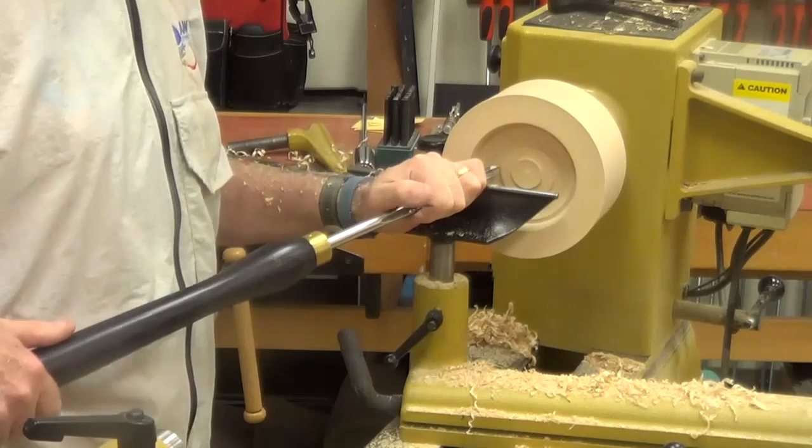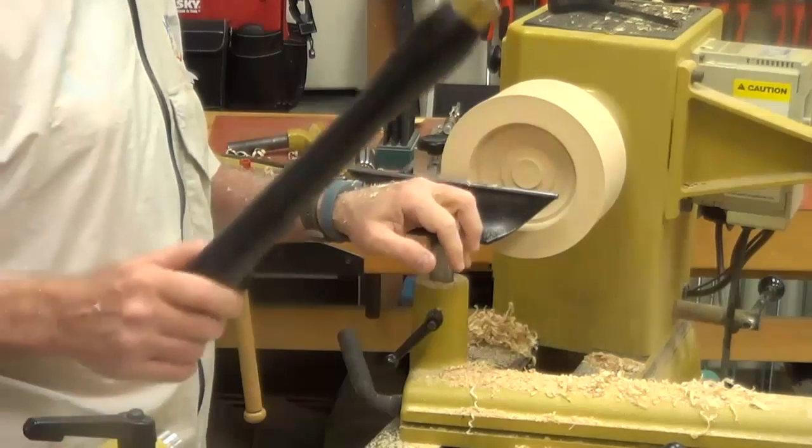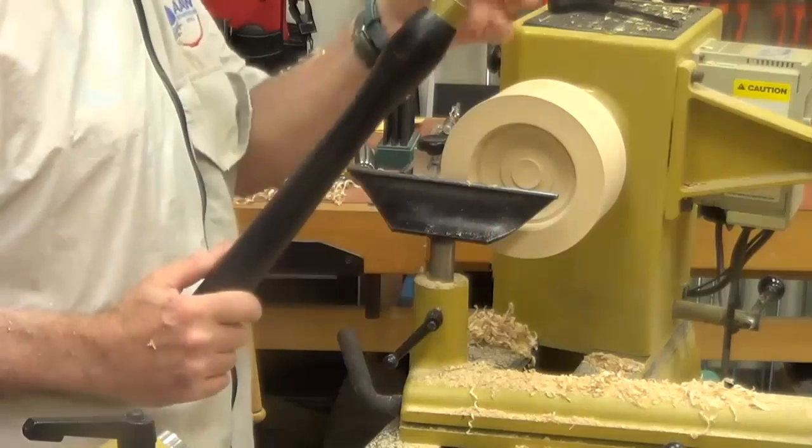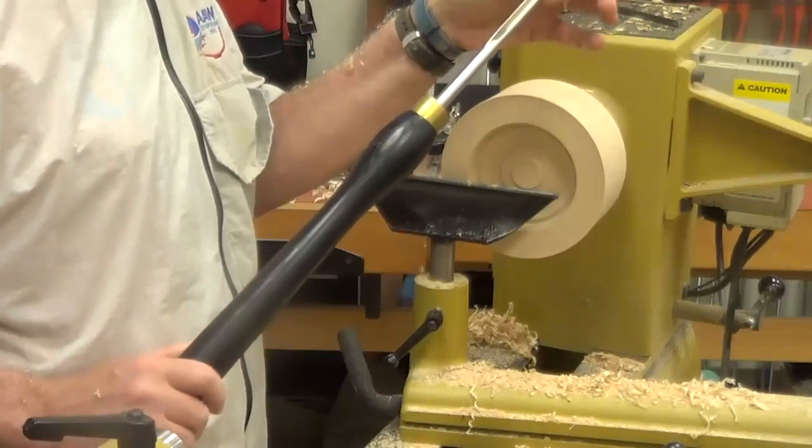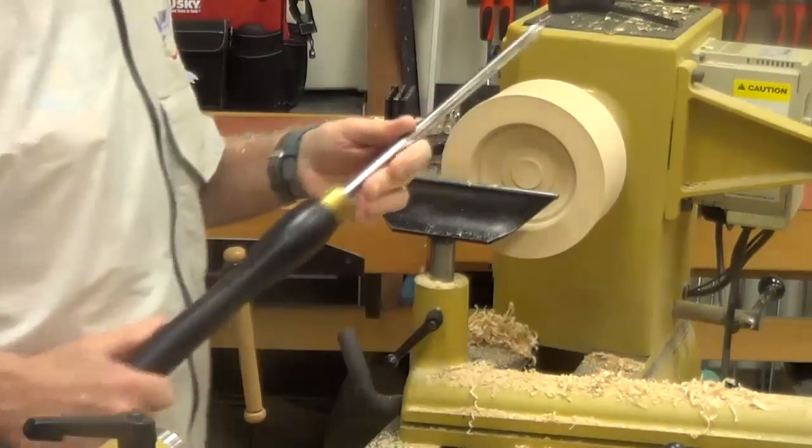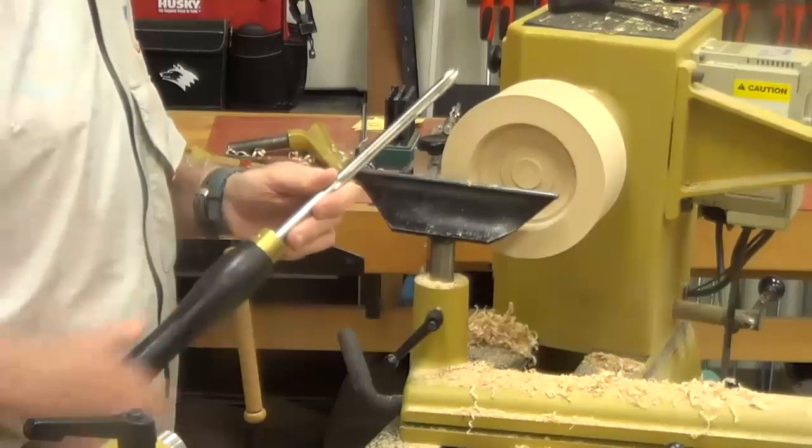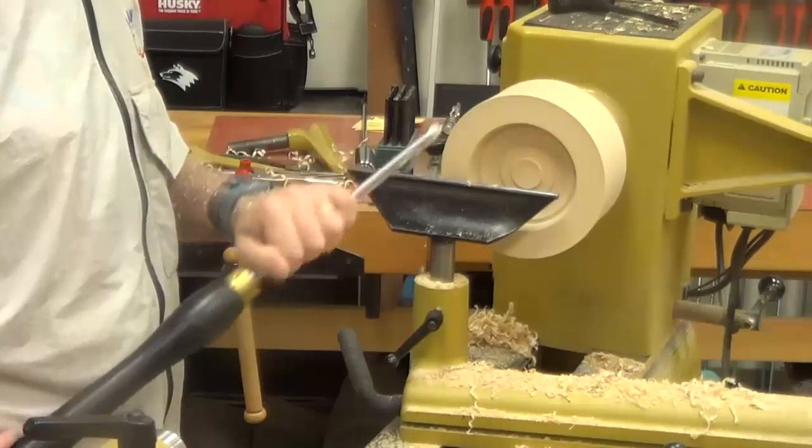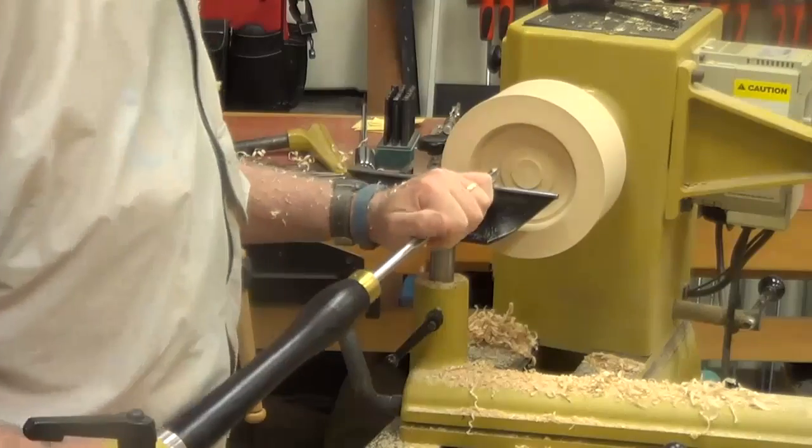I'm using a half inch bowl gouge now, half inch shank three-eighths flute. I will switch to a bigger bowl gouge. And then when that going gets tough, I'll switch to some heavy-duty scrapers.